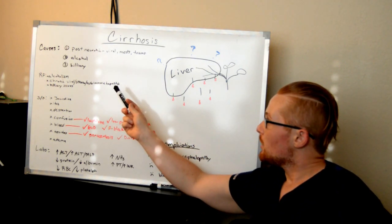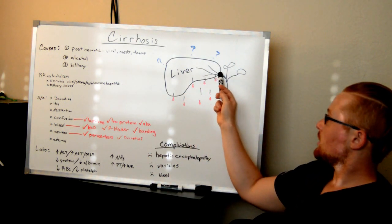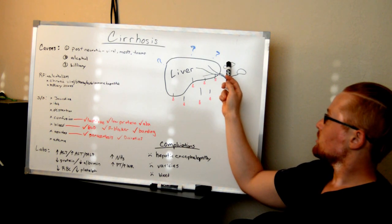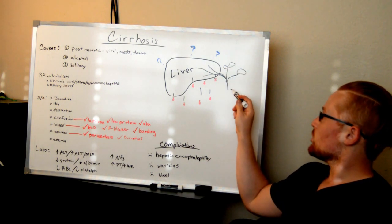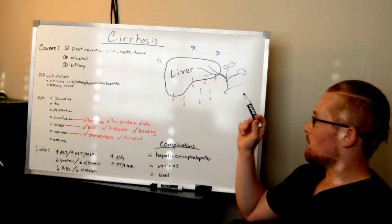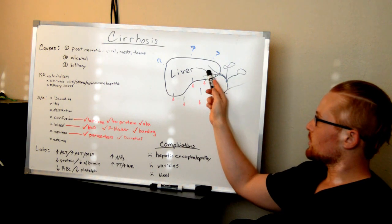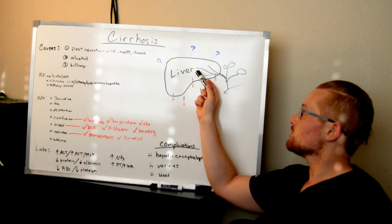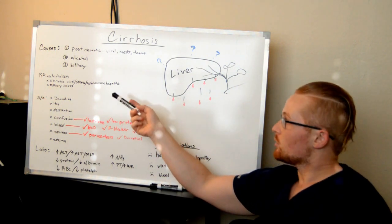The biliary system can also be messed up. You can see here's the liver, here's some of the biliary tracts. You can see it connects to the pancreas and the gallbladder here, and eventually it makes its way to the intestines. If there's problems with the biliary system, it can lead to scarring and damage within the liver.